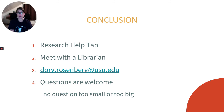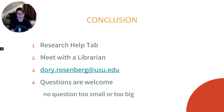For a quick recap: you can go to the research help tab in your Canvas course for some suggested resources. You can use the meet with the librarian button, which you can find in the research help tab or at the library homepage, to schedule a one-on-one meeting with me. Or you can email me directly at dori.rosenberg@usu.edu. And lastly, no question is too big or too small — all questions are welcome. That's all for now. Happy searching, folks!